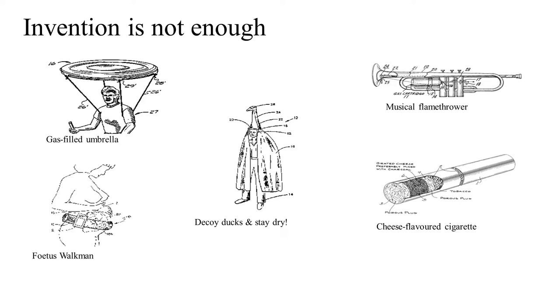However, none of these, as far as I know, are actually in widespread use in the world outside. There's the famous gas-filled umbrella idea, the musical flamethrower, a little gadget to keep your unborn baby entertained for nine months by strapping a Walkman to your tummy, a device for decoying ducks if you want to hunt them and still staying dry, and for me, the genius who should get the star prize, the man who thought the world needed a cheese-flavoured cigarette.